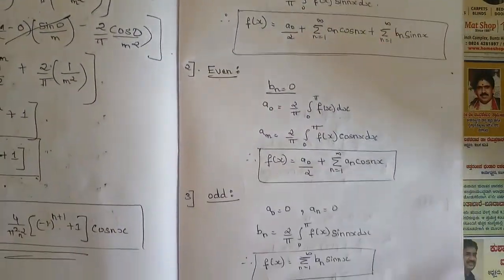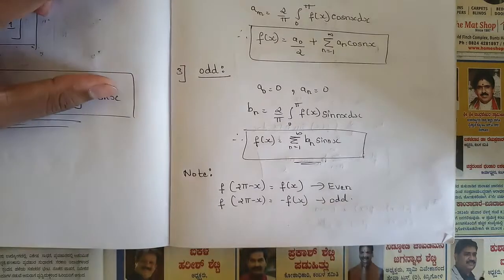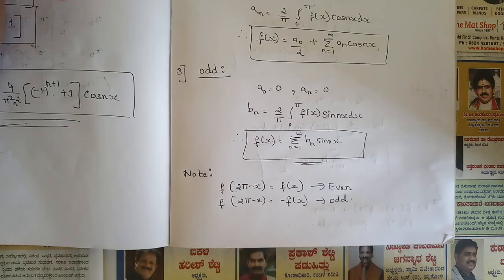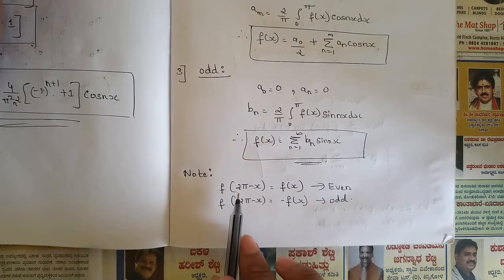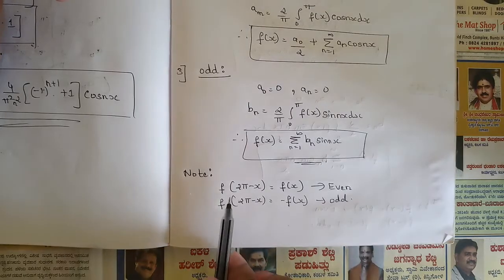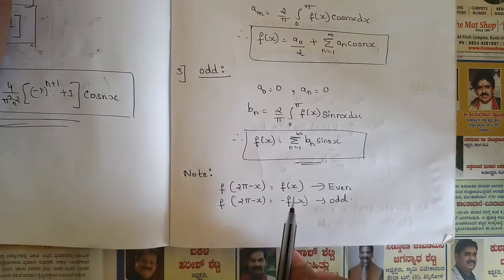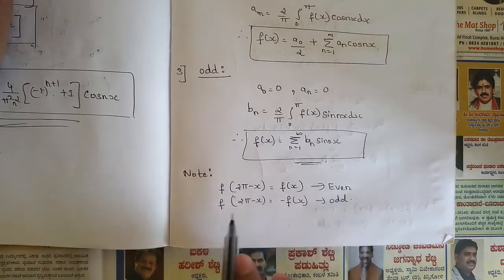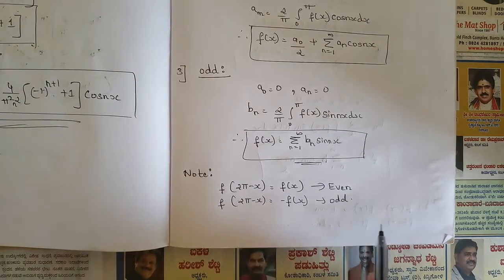In the case of minus pi to pi, the first step was replacing x by minus x. In this case — interval zero to two pi — there is a slight change: instead of replacing x by minus x, we replace x by two pi minus x. The condition remains the same: if f(two pi minus x) equals f(x), then the function is even; if f(two pi minus x) equals minus f(x), then it is odd. That is all about the interval from zero to two pi.